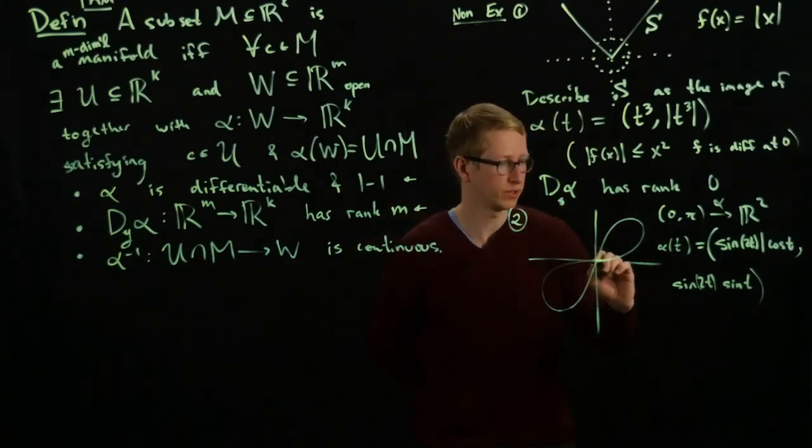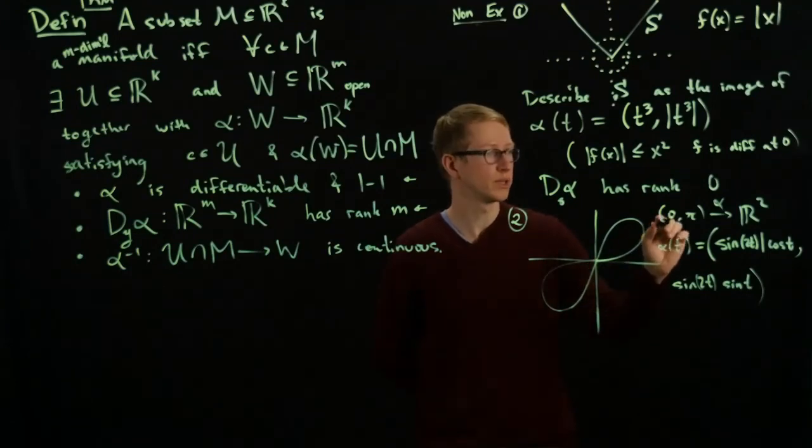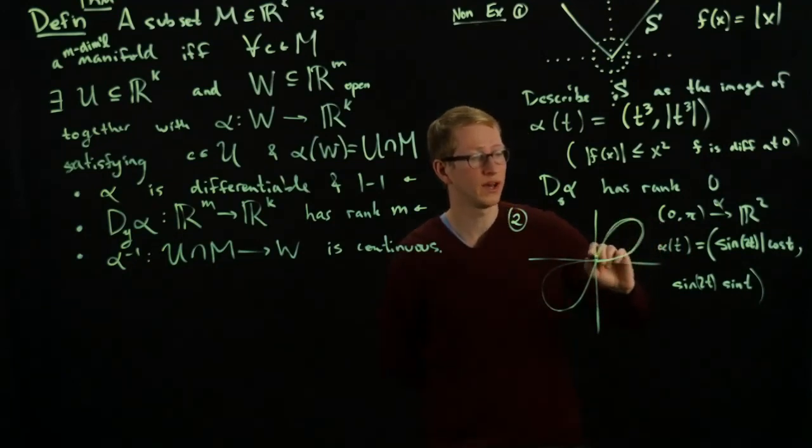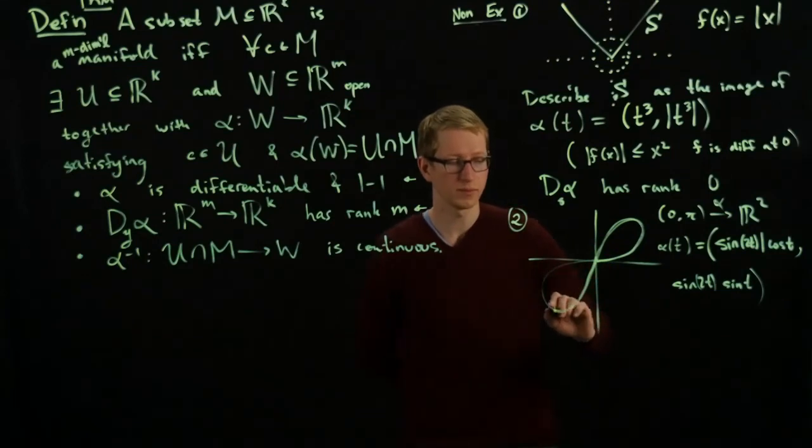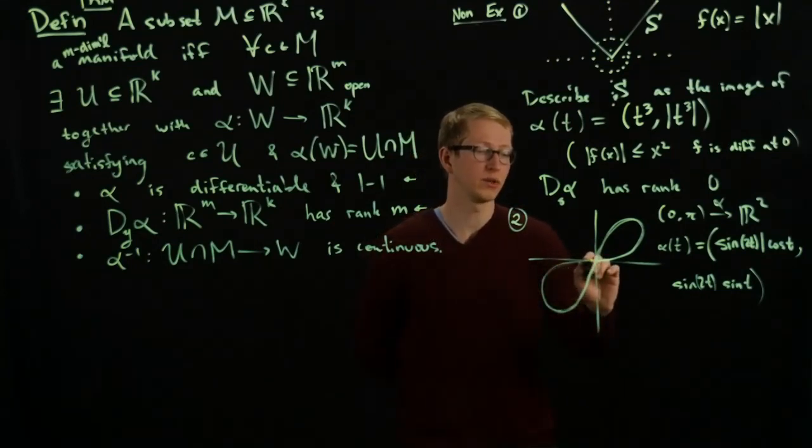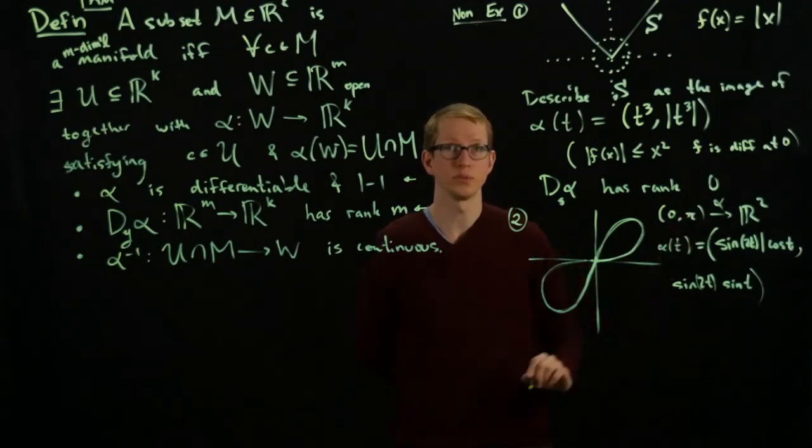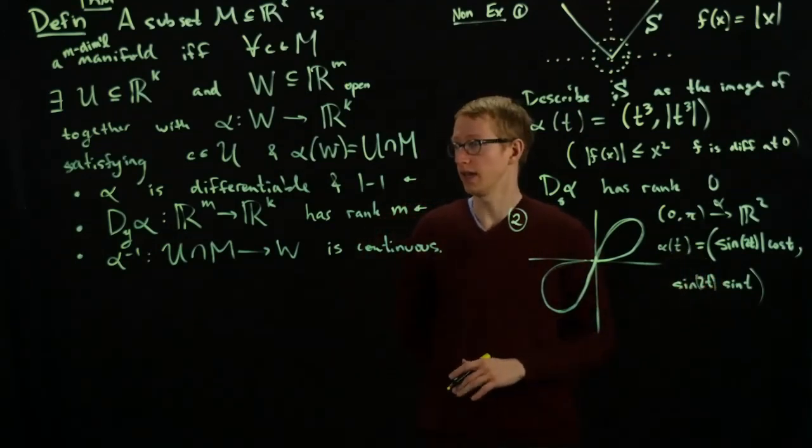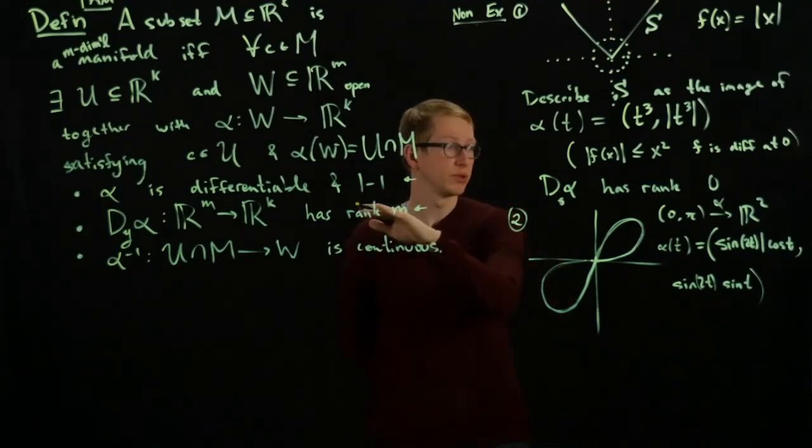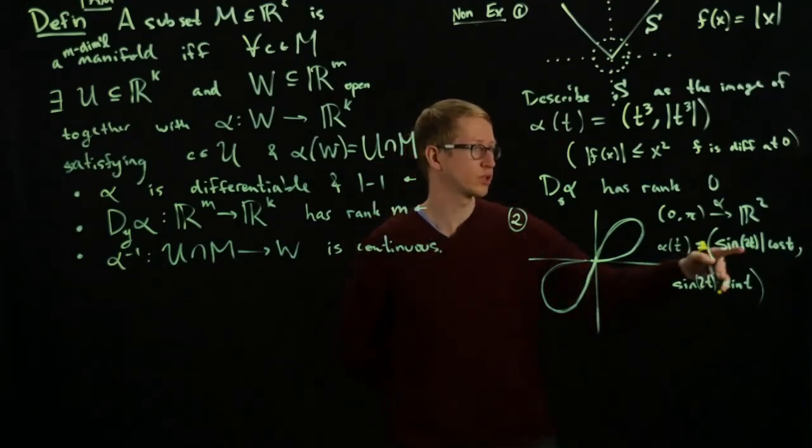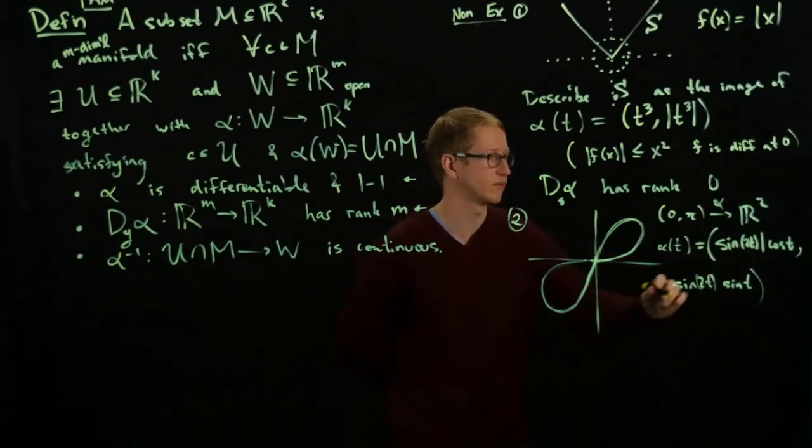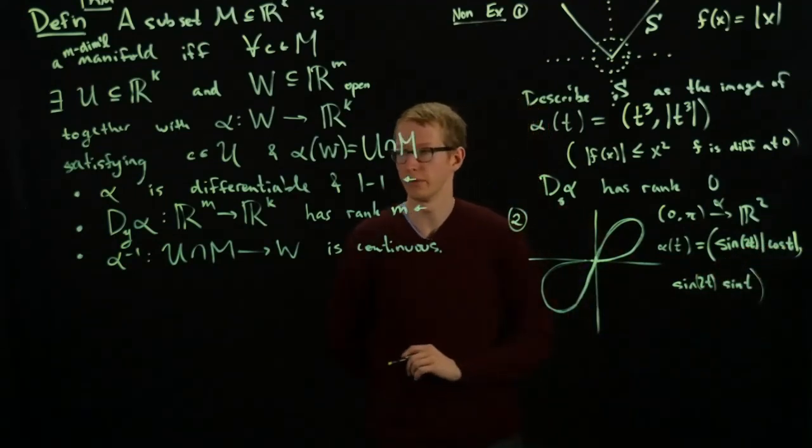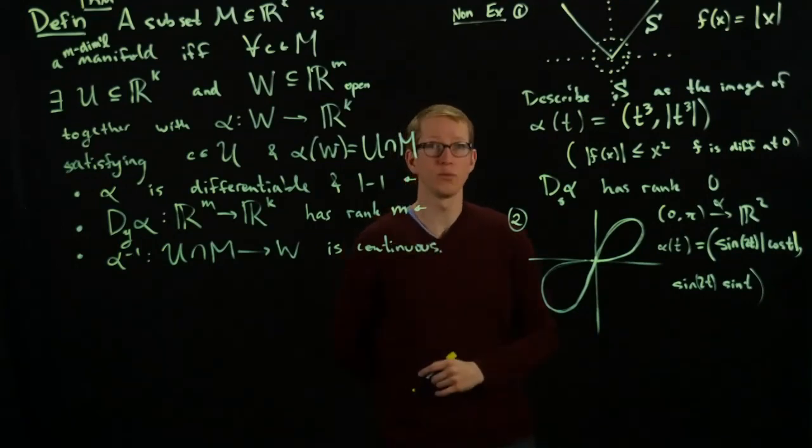So this function actually traces out the following curve. It starts very close to the origin because we don't include 0, so it starts very, very close to the origin. It comes out along this way, goes down through the origin this time, comes back up, and then it asymptotically approaches the origin again from this side as it approaches pi. So this function, if I look at it, it actually satisfies the first two conditions. It is differentiable everywhere. You can actually check that. It might not be so obvious because of the absolute value sign here, but it's still true. And that's because - well, I'll let you think about why. And it also has rank 1 everywhere as well.